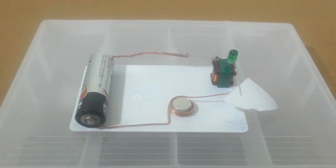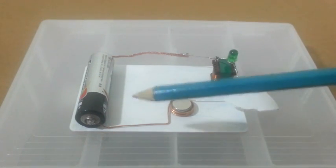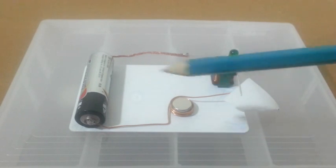The Joule Thief is a circuit that uses the self-inductance of an inductor to raise the voltage of a battery. This green LED needs a minimum of 1.9 volts to work. The battery is 1.5 volts.